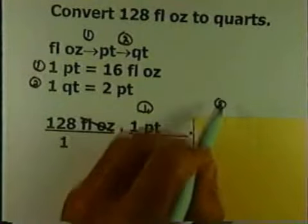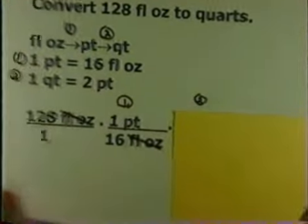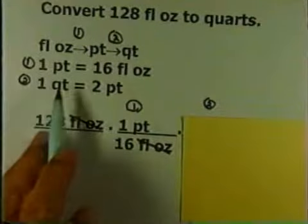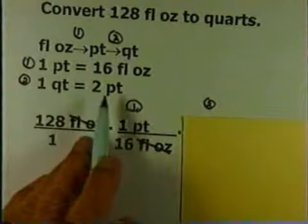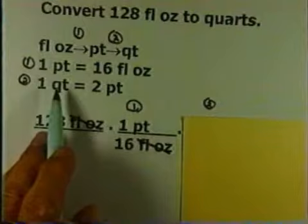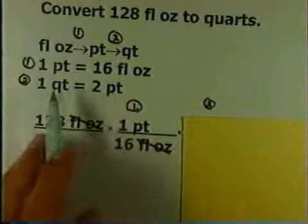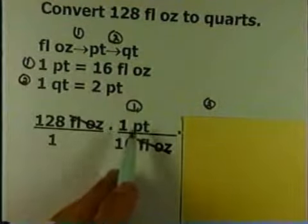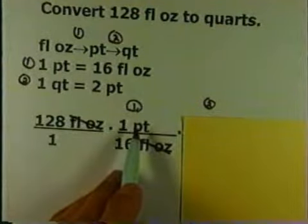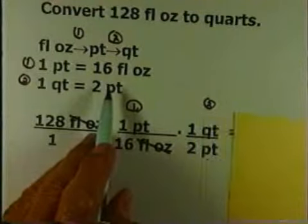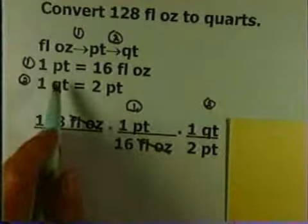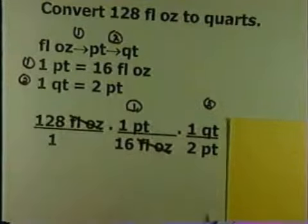I'm ready to use my second conversion. One quart is two pints. One of these goes on top, the other goes on the bottom. I'm trying to cancel pints. That means the two pints goes on the bottom, and the one quart goes on top.